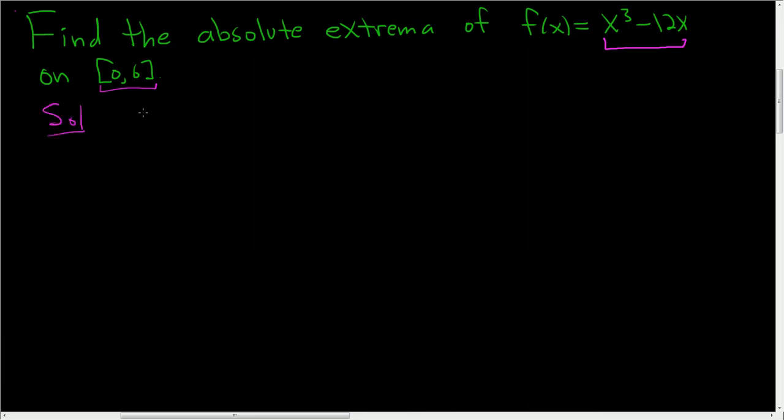The first step is to find the critical numbers. So find the critical numbers, we'll call them CNs. That's the first step. So you start by taking the derivative, so f prime of x.